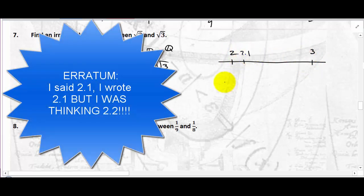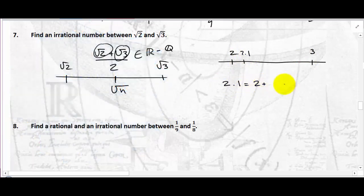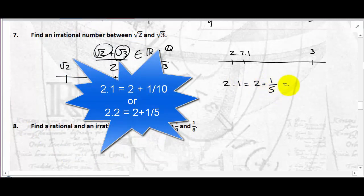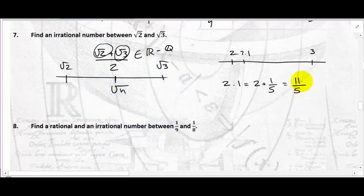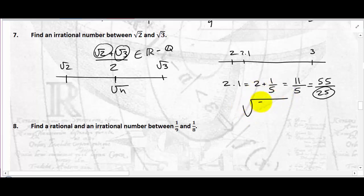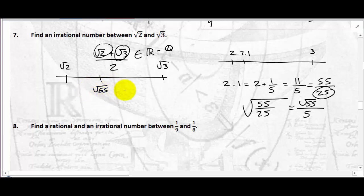We'll square root 2 and root 3 to get 2 and 3, then find a number in between. Take 2.1, for example. 2.1 equals 2 and 1/10, which is 11/5. Multiplying both sides by 5 gives 55 over 25 — and now the denominator is a perfect square. Taking the square root: square root of 55 over 25 equals square root of 55 over 5. So between root 2 and root 3, I have square root of 55 divided by 5, which is irrational since 55 is not a perfect square.